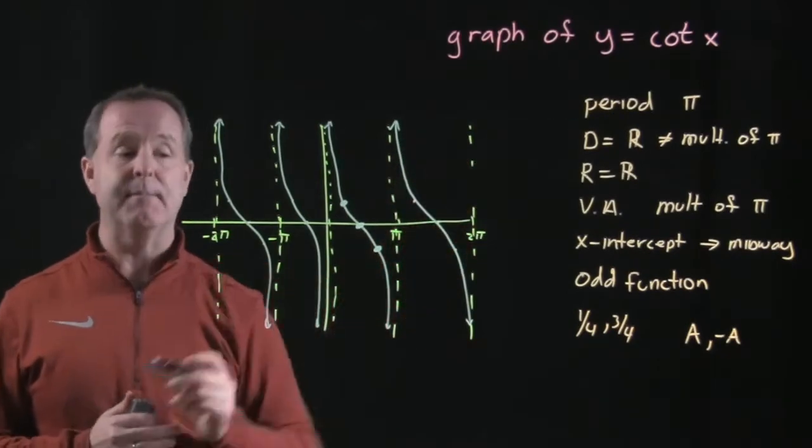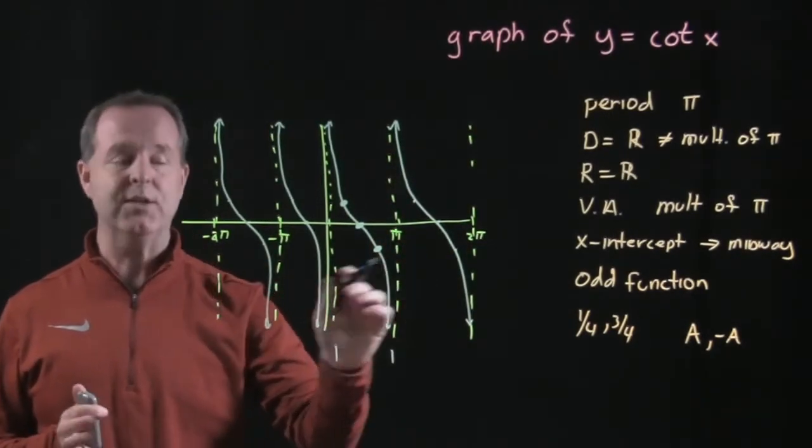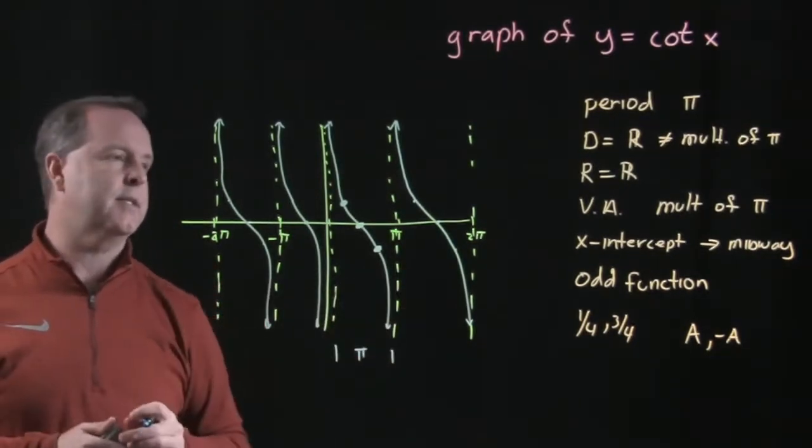The cotangent graph has a period of pi. So between any two vertical asymptotes, it repeats every pi units down the road.